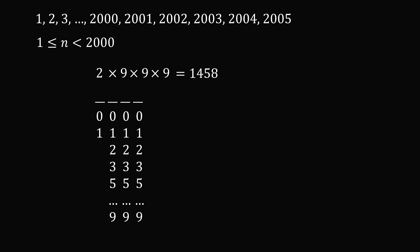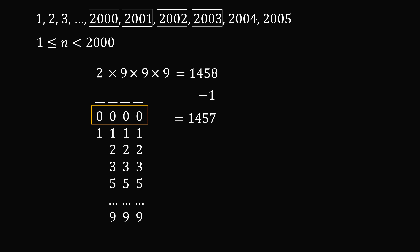We need a couple of adjustments. We subtract 1 for the number 0000, which is just the starting number, giving 1457. Then we count the numbers 2000 or larger: 2000, 2001, 2002, 2003 — we skip 2004 — and 2005. That's 5 more numbers. So 1457 + 5 = 1462. We've gotten to the same answer, but a lot faster.